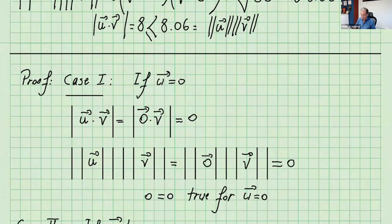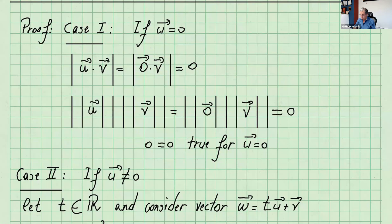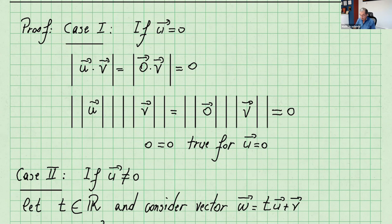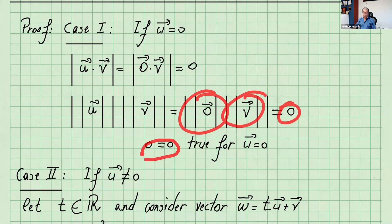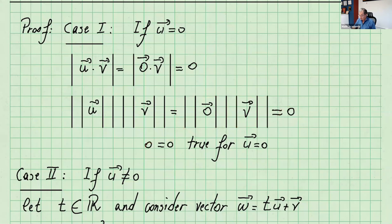The proof of this is very interesting, so let's go over the proof of the Cauchy-Schwarz inequality. There are a couple of cases. Case 1: consider that u is 0. The dot product of the zero vector with any vector is going to be 0, so the absolute value of 0 is just 0. Norm of u times norm of v — norm of the zero vector is 0 — times any number gives you 0. So in this case we get equality, and it works because it says less than or equal to. So it's true for u equals 0.